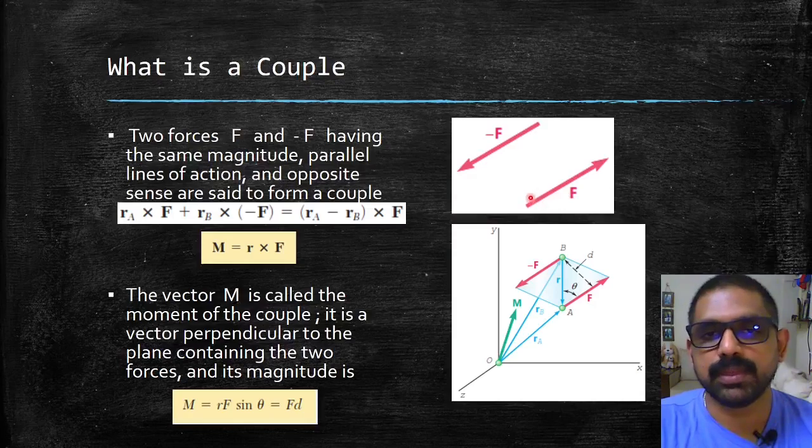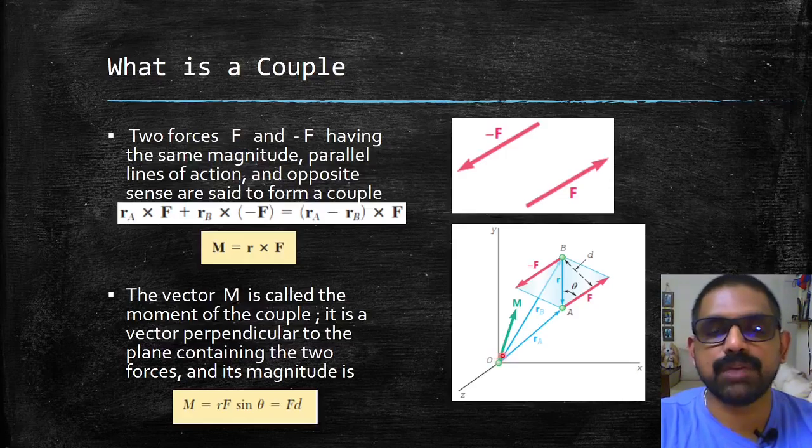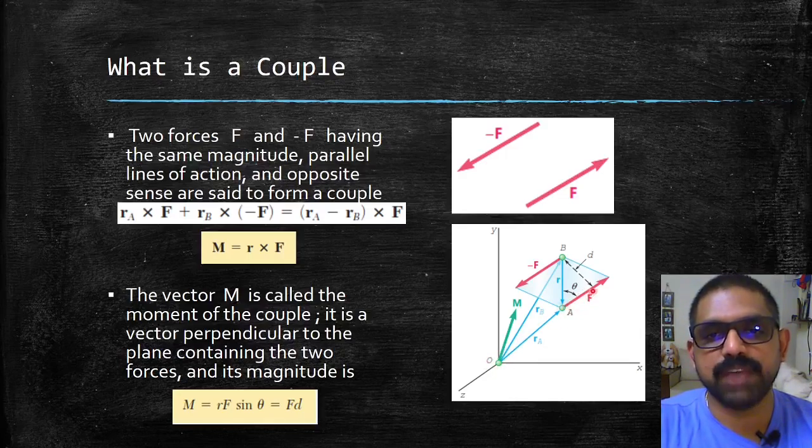These two forces form a couple. Let us consider taking moment of these forces minus F and F about point O. You see carefully, this force F is acting at point A and this force minus F is acting at point B. Find the moment of these two forces about the origin O.